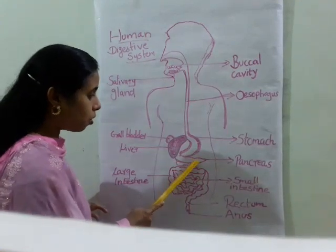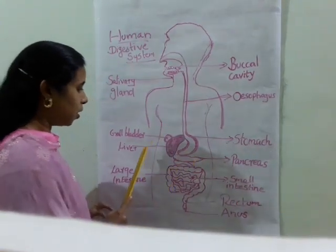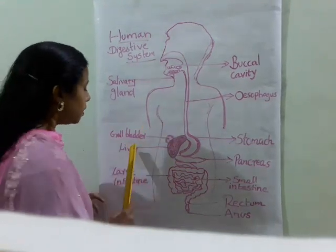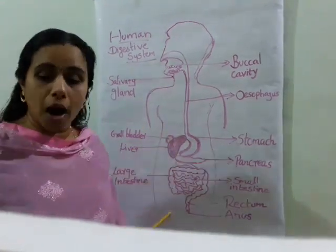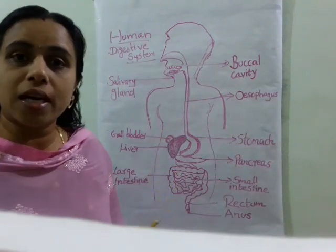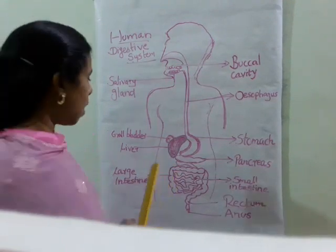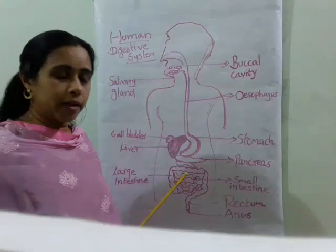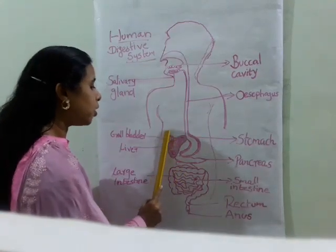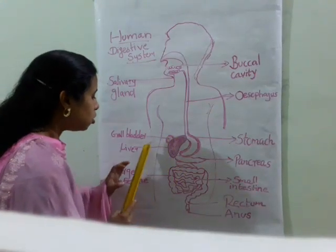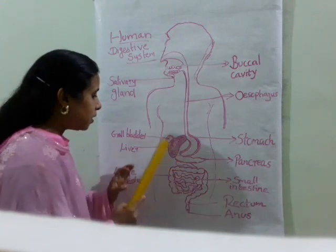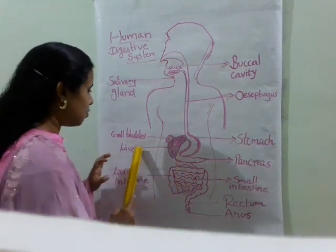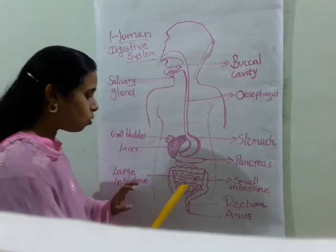You already know about the pancreas and liver. The liver secretes bile juice, and this bile juice is stored in the gallbladder. The liver secretes this bile juice into the small intestine.